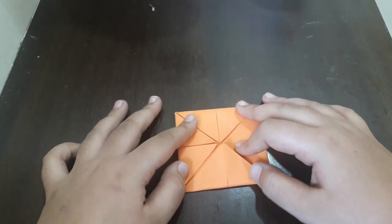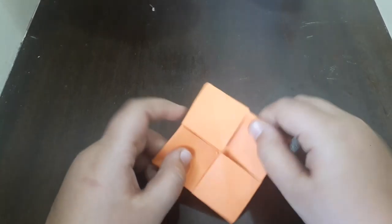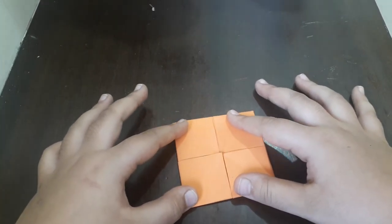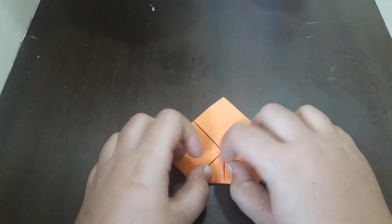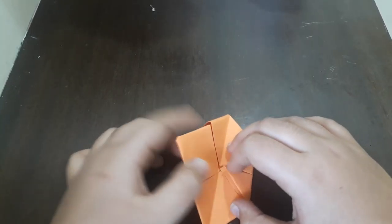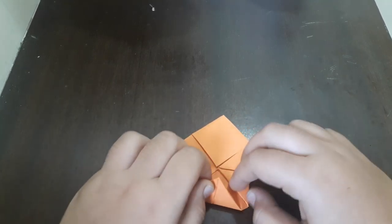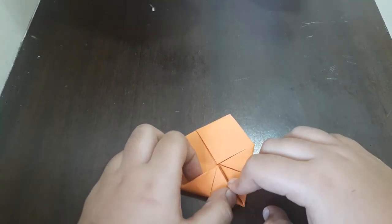After doing this, you'll get the model like this. Turn it to the back side. You'll get like four cups. Make this into half. As this is hard paper, it's a little bit hard to fold.